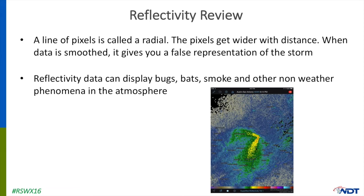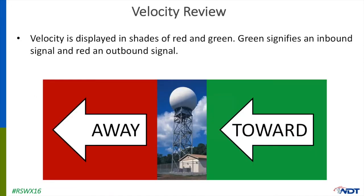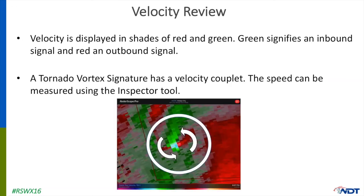Reflectivity data is great for viewing storms, but it also shows non-weather phenomena like bugs, bats, and even smoke. Reflectivity data in velocity mode is displayed in shades of red and green. Green colors tell us that particles are moving towards the radar; red signifies particles moving away. Red and green pixels that are close to each other can signal rotation in the storm. We call this a tornado vortex signature, or TVS. You can use the RadarScope inspector tool to check wind speeds, and if you add those wind speeds together, it can give you an idea of how strong the rotation is in the storm.